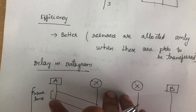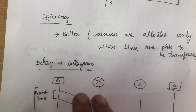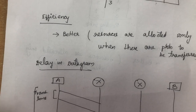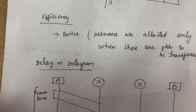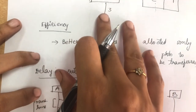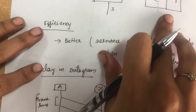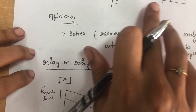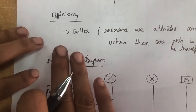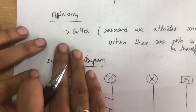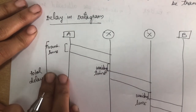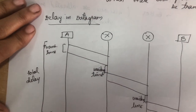In the datagram approach, we have learned the basic diagram, how to send packets, and how the routing table maintains information about all addresses. We have also seen the efficiency comparison and the delay calculation for the datagram approach.